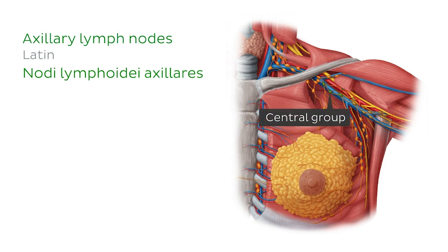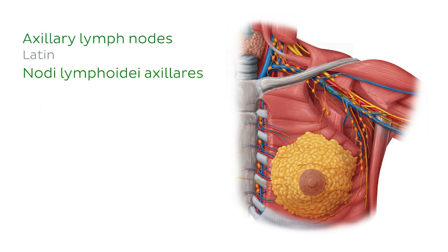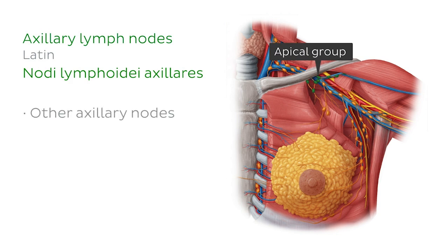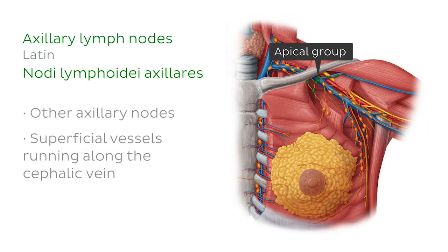The fourth is the central group, which receives the efferent vessels of the three groups previously mentioned. Finally, the fifth is the apical group, which also drains lymph from the other axillary nodes, as well as lymph that drains directly from some superficial vessels running along the cephalic vein.